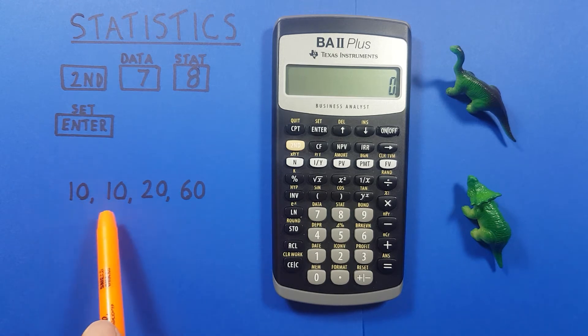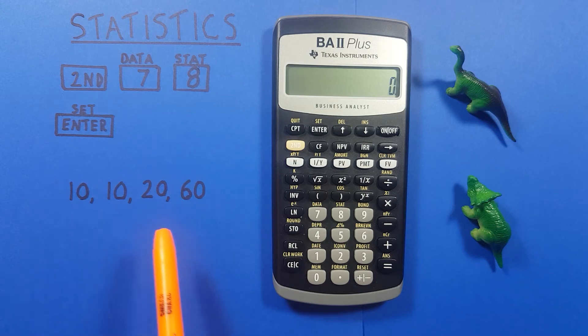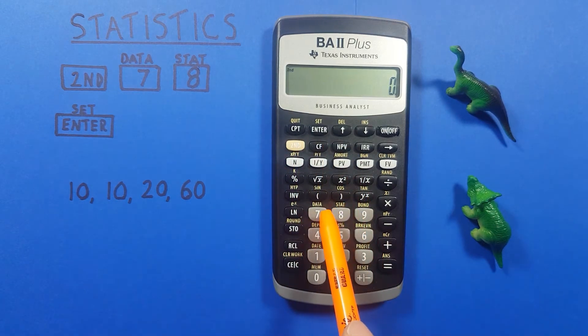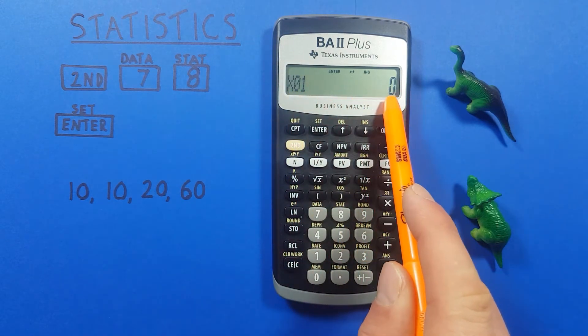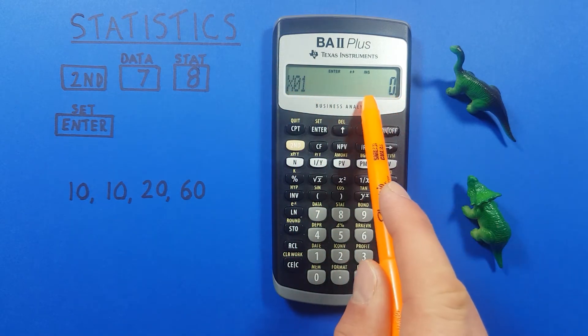These can be counts, weights, whatever we want it to be that we're looking for our statistics for. To enter them we press second and then seven. We see x01, this is where we enter our first piece of data.